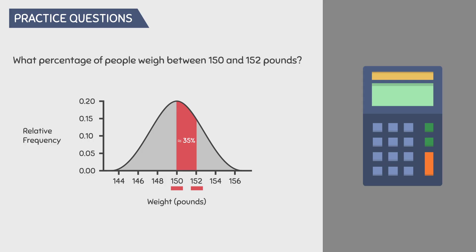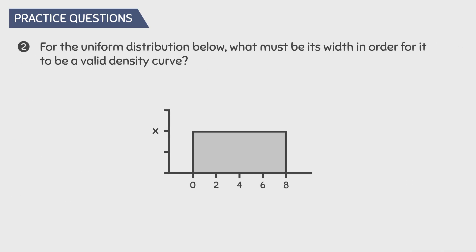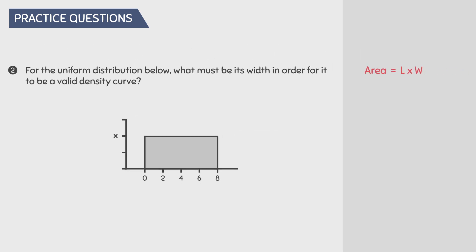You'll know how to calculate these exact areas in an upcoming video using a different method. Question number 2: for the uniform distribution below, what must be its width in order for it to be a valid density curve? The area of a rectangle equals length times width, so width equals area divided by length. We know the area of any valid density curve is 1, and the length is 8. So 1 divided by 8 gives us an answer of 0.125.